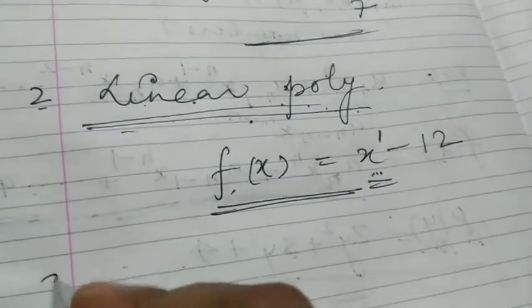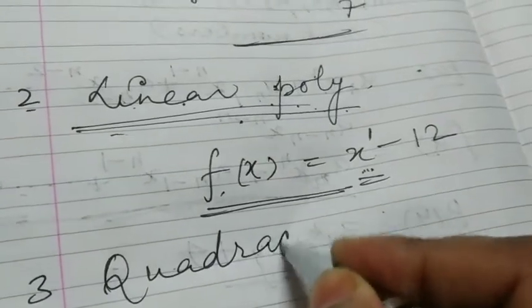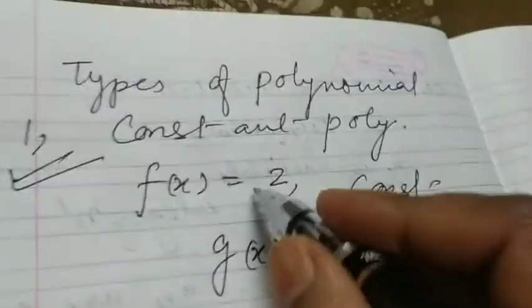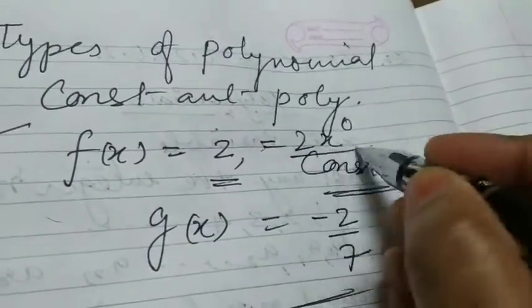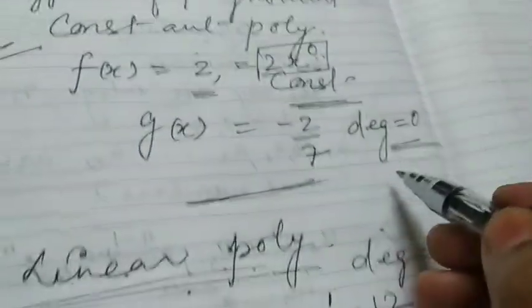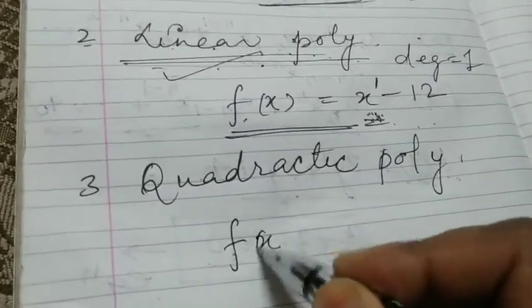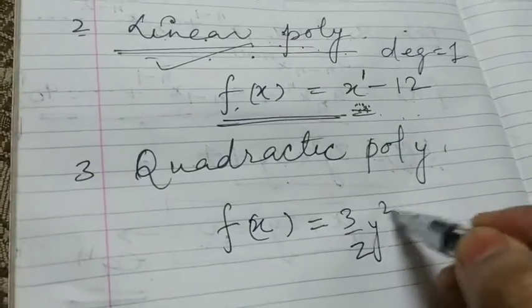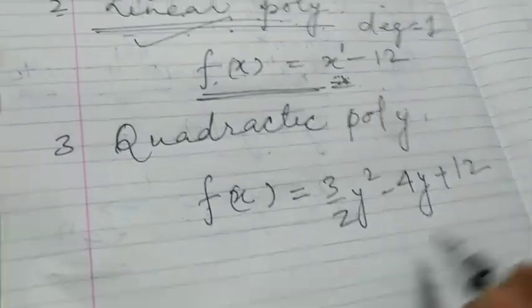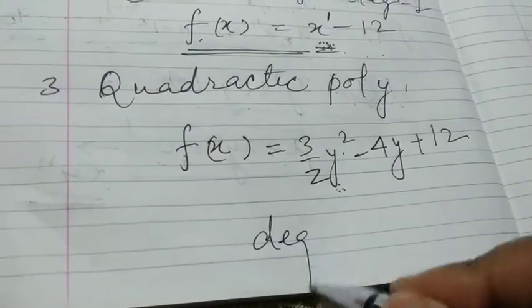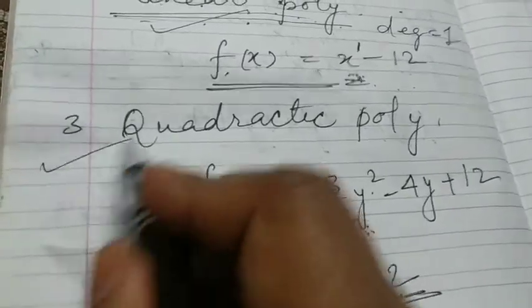The third type is the quadratic polynomial. For the constant polynomial, the degree of x is 0 — it can be written as 2·x⁰. For linear polynomial, the highest degree of x is 1. Now for quadratic, suppose p(x) = (3/2)y² − 4y + 12. The highest power here is 2, therefore the degree is 2, and this kind of polynomial is called a quadratic polynomial.